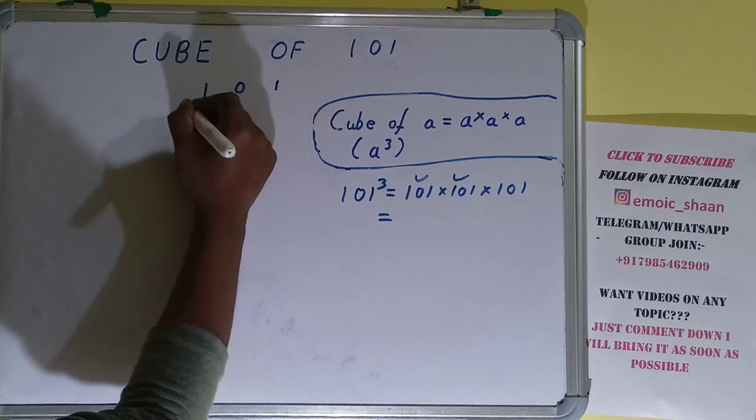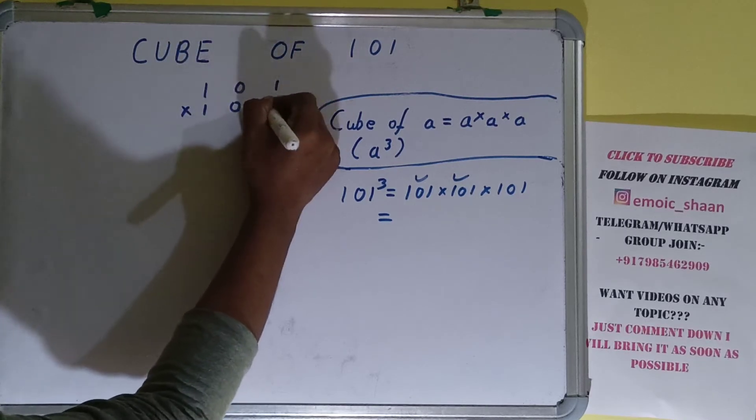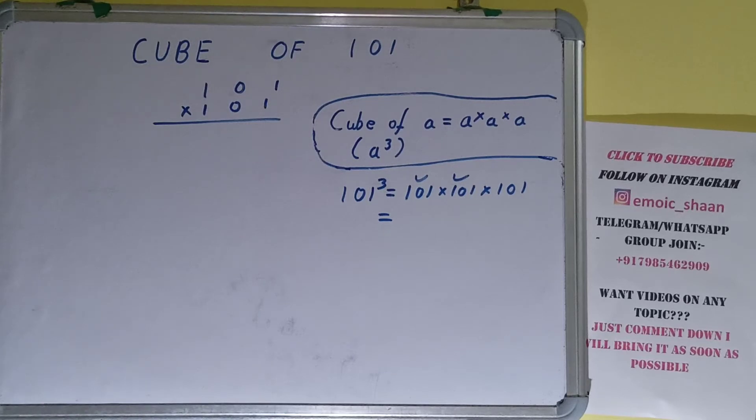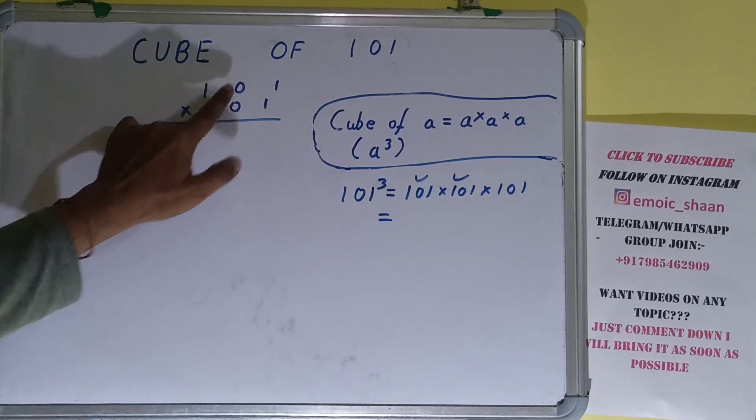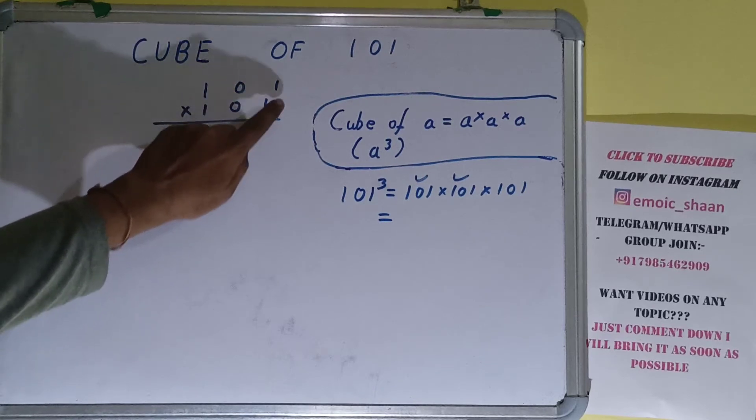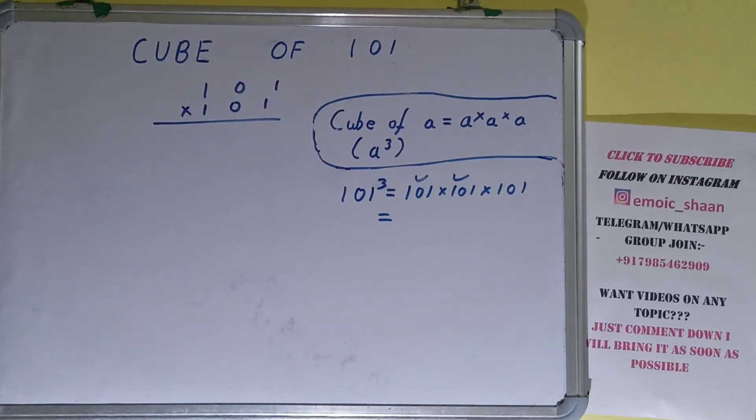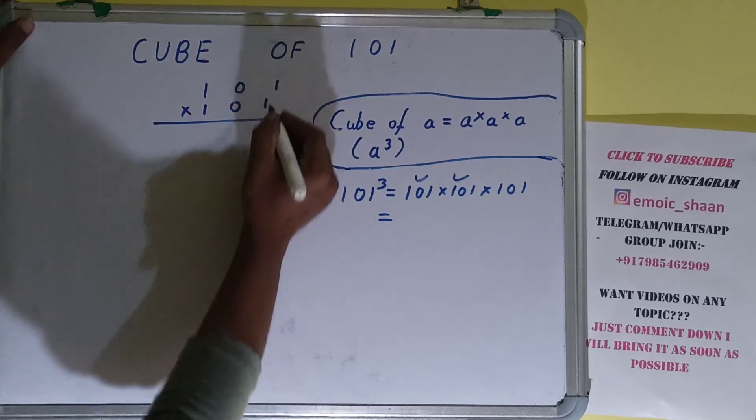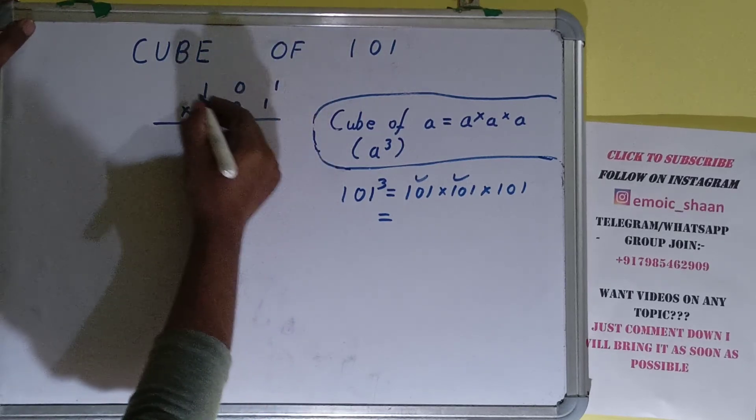So 101 into 101. Now for one and for zero there is a trick: zero into anything is zero and one into anything is that number. Remember this trick, this will save your time. So one into anything is that number, so we can just copy the upper row 101 for this one.